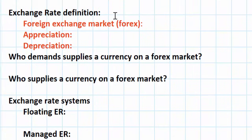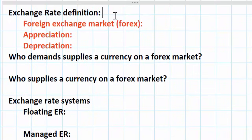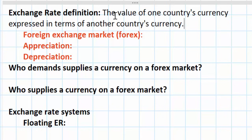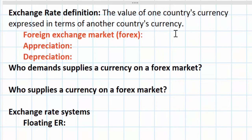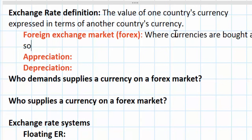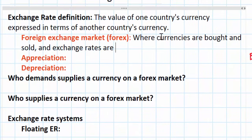An exchange rate is simply the value of one country's currency expressed in terms of another country's currency. Just like the price of most things, exchange rates are determined in the marketplace. The market in which exchange rates are determined is known as the foreign exchange market, where currencies are bought and sold and exchange rates are determined.